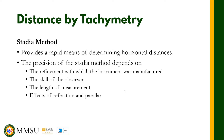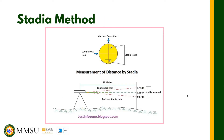The stadia method provides a rapid means of determining horizontal distances. The precision of the stadia method depends on the refinement with which the instrument was manufactured, the skill of the observer, the length of the measurement, and the effects of refraction and parallax. To illustrate, let us look at the following figure.